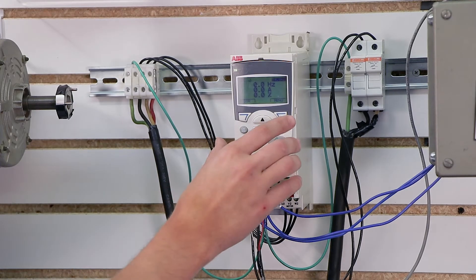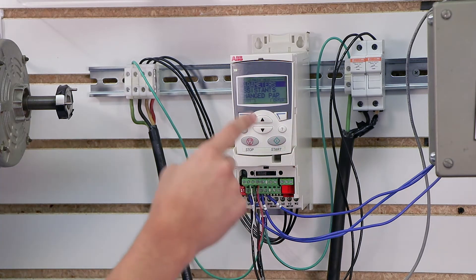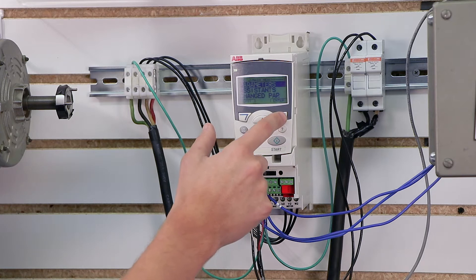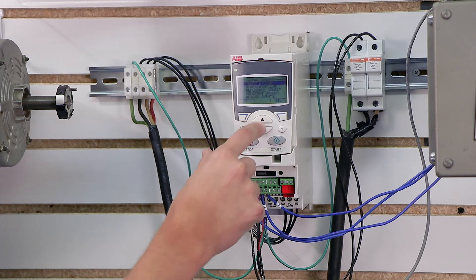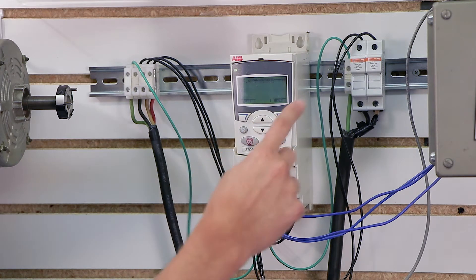So to get into parameter group 11, first you just press the menu button from the home screen, you go to parameters and press enter, and then you use the up and down arrow keys to get to parameter group 11, reference select, and then you press select.